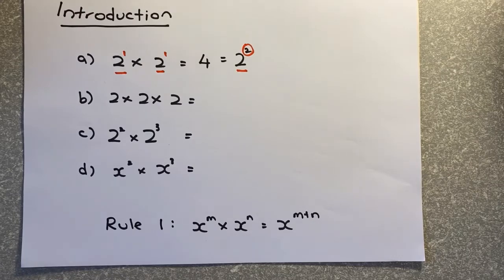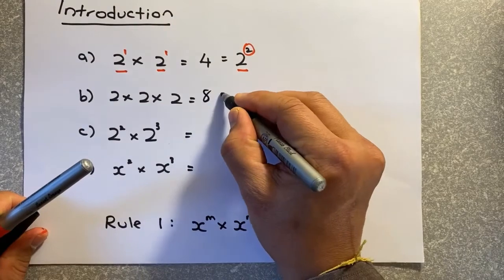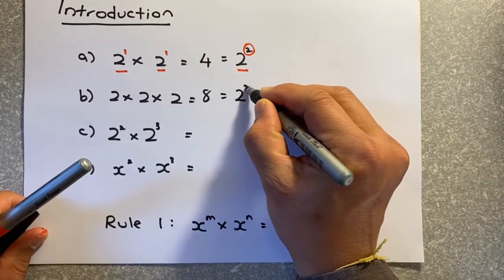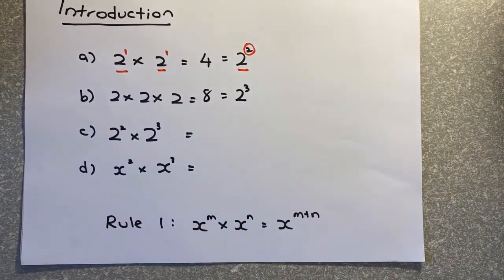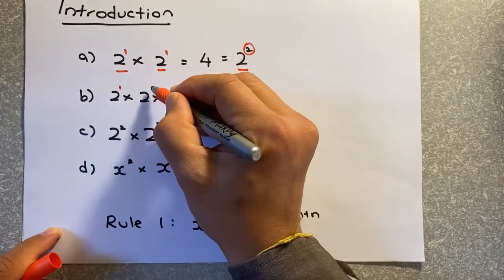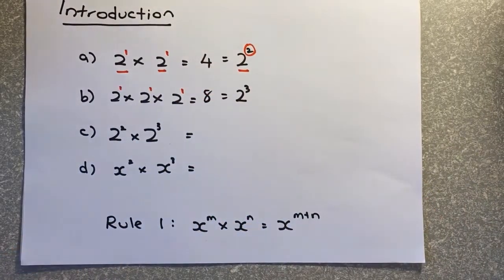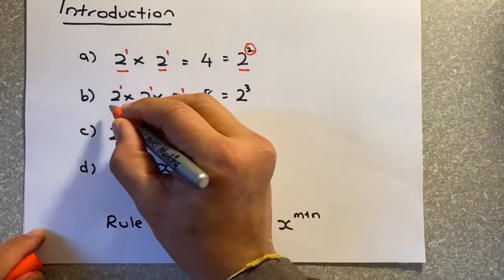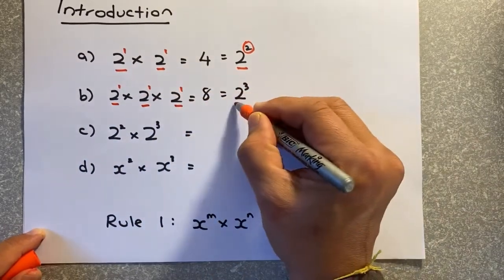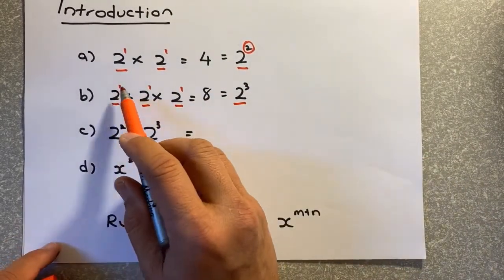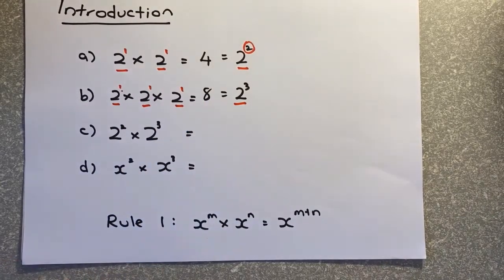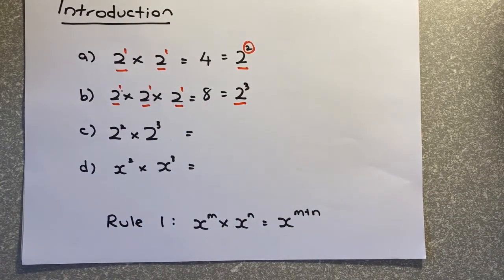So we'll do another example. 2 times 2 times 2 is 8, also can be written as 2 to the power of 3. So how you get 3? It's very simple. There are 3, 2s, so the power is 1, so the base is the same, 2, 2 and 2, so the 2 remains, and you just add the power 1 plus 1 plus 1, that will give you 3. So that's how the power indices work.